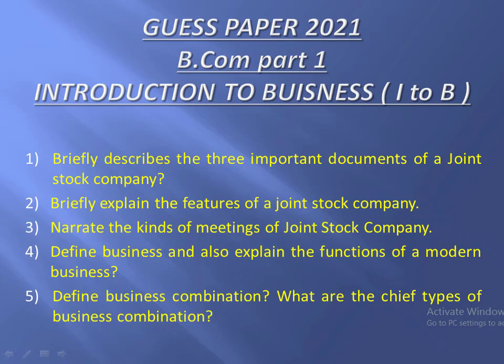यह हम देख रहे हैं कि Introduction to Business में कौन-कौन से important questions हैं। यह सारे questions important हैं, लेकिन इनमें से कुछ questions बहुत ज़्यादा important हैं। इनमें question number five — business combination, what are the chief types of business combination — इस question के paper में आने के chances दूसरों की निस्बत कुछ ज्यादा है।